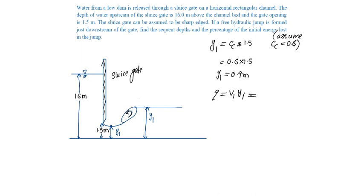We know q equals v1 y1, which is equal to v1 equals square root of 2gh times y1, which is equal to 2 times g is 9.81 times h is 16 minus y1 that is 0.9, under root times y1 is 0.9, which is equal to 15.49 meter cube per second per meter width of the channel.